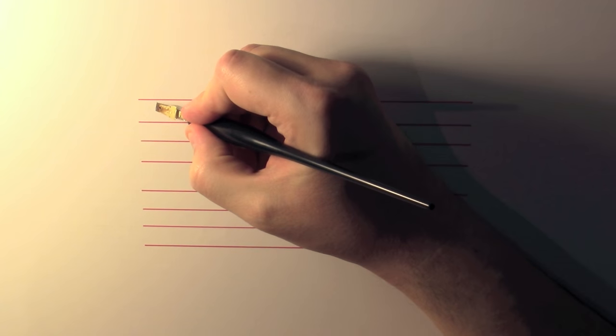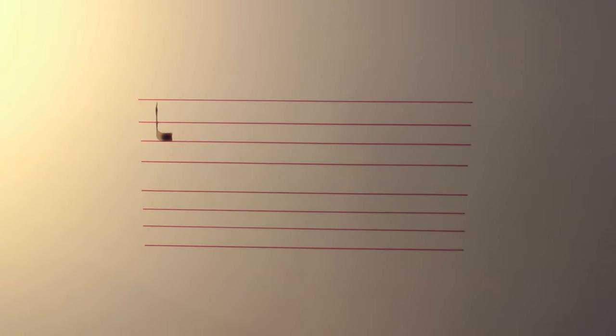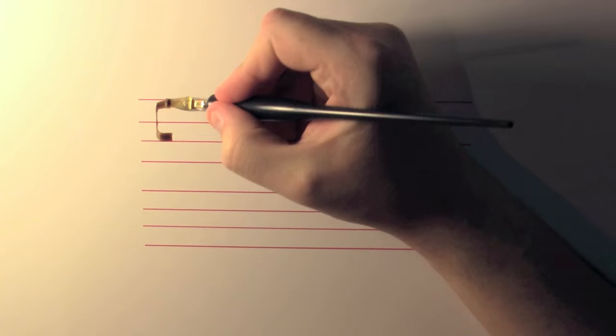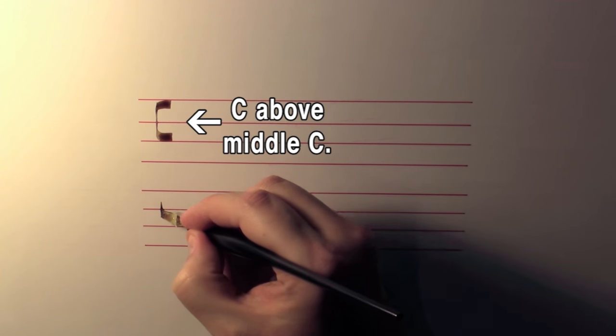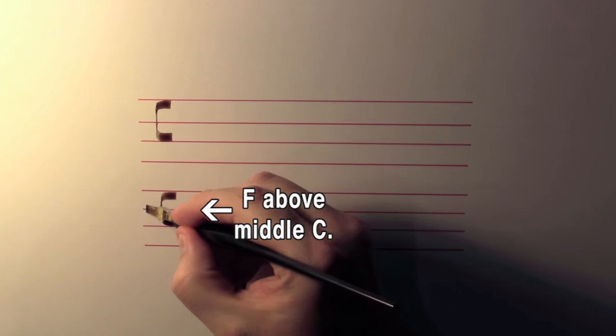As music notation evolved in the 13th and 14th centuries, a staff of four lines begins to be used by scribes writing Gregorian chant, and a clef marking either the C above middle C or F above middle C begins to be used.